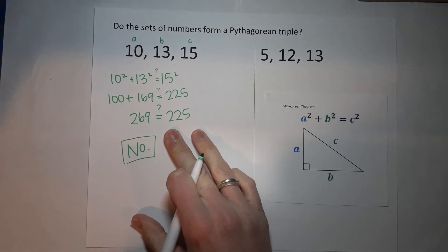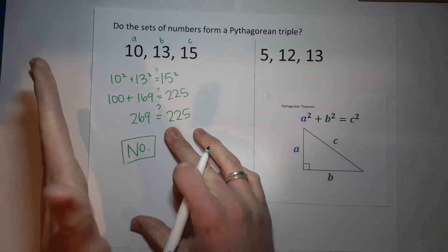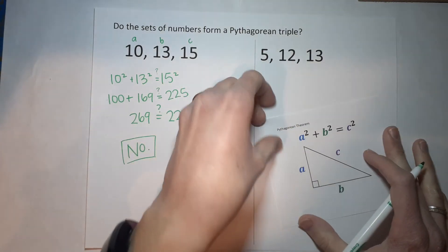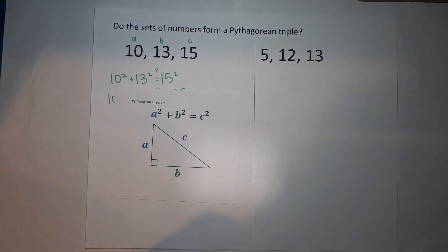These numbers can tell us if it's an acute triangle or obtuse triangle, and I have a video on that as well. I'll link it over there. Okay, let's do the second problem.